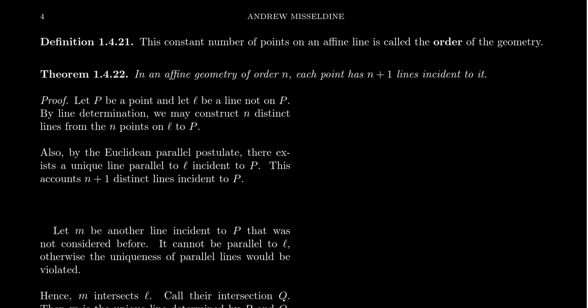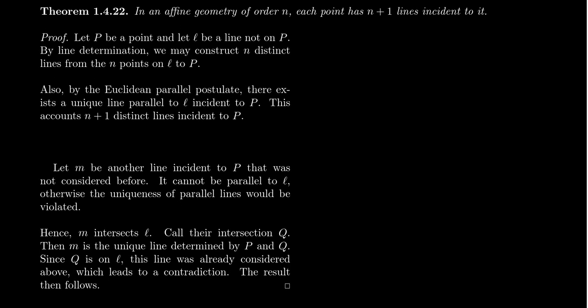We want to develop the theory of affine geometry before discussing new affine geometries. Since all lines have the same number of points — this order, which we'll typically call n — in an affine geometry of order n we can say other things. All lines have n points, and the next theorem says that if the order is n, then each point has n+1 many incidence relationships; that is, every point is on n+1 lines.